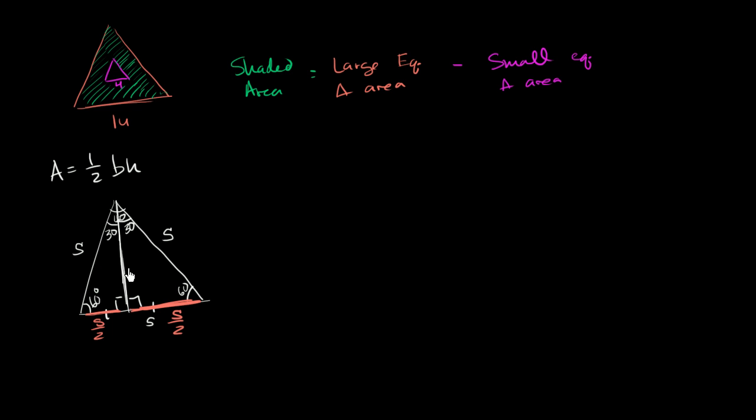And then we know from 30-60-90 triangles that the side opposite the 60-degree side is square root of 3 times the shortest side. So this altitude right over here, this altitude, is going to be square root of 3 s over 2. And now we can figure out a generalized formula for the area of an equilateral triangle.